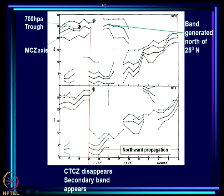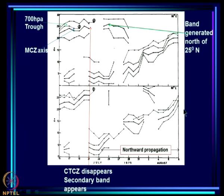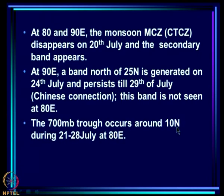The sequence of events: first the band is established, then it hangs around, then it dies. Once it dies, it is quiet for a few days; during that time the secondary band has appeared, then the mid-latitude band from China comes. When that dies, you get clean northward propagation at 90°E and reasonable northward propagation at 80°E.